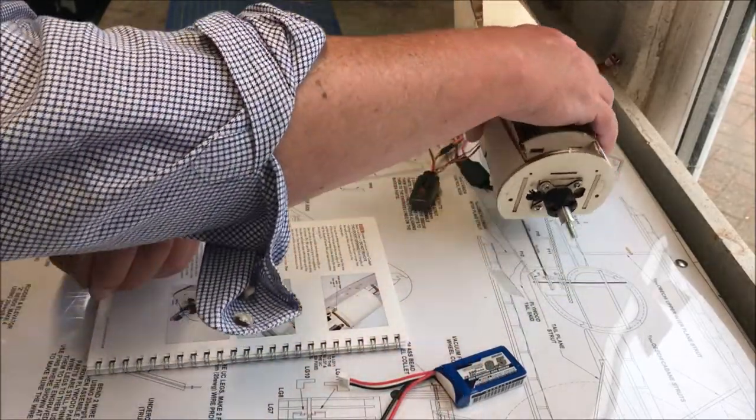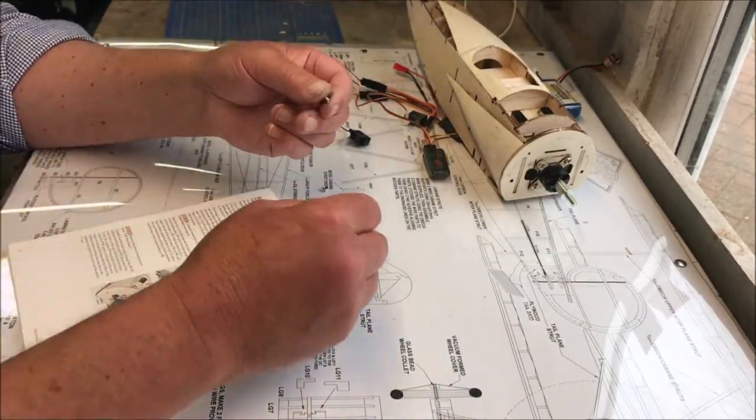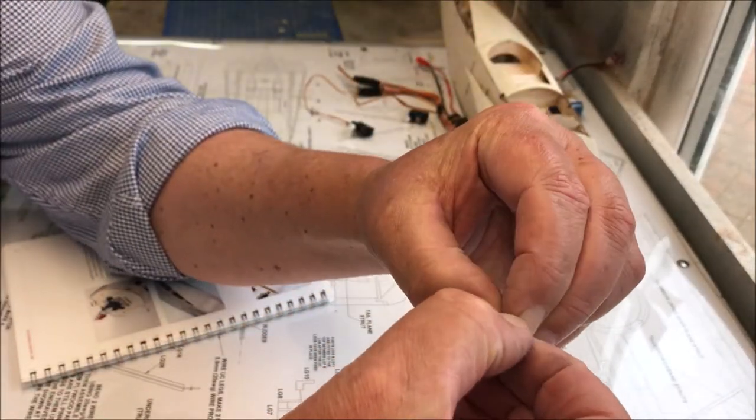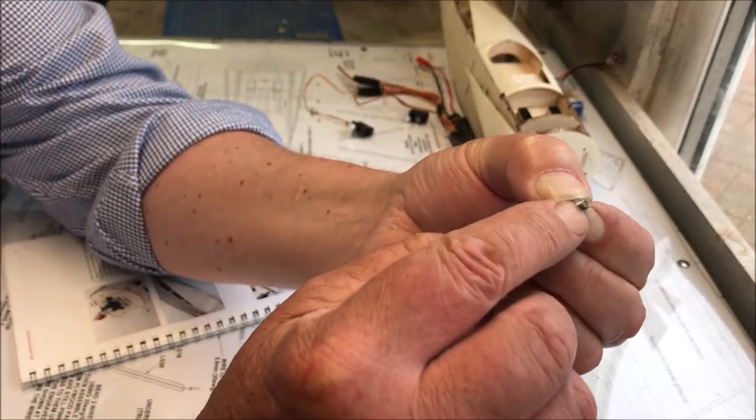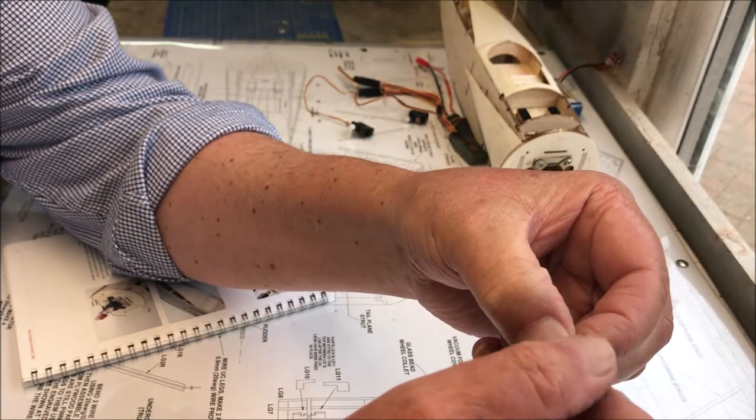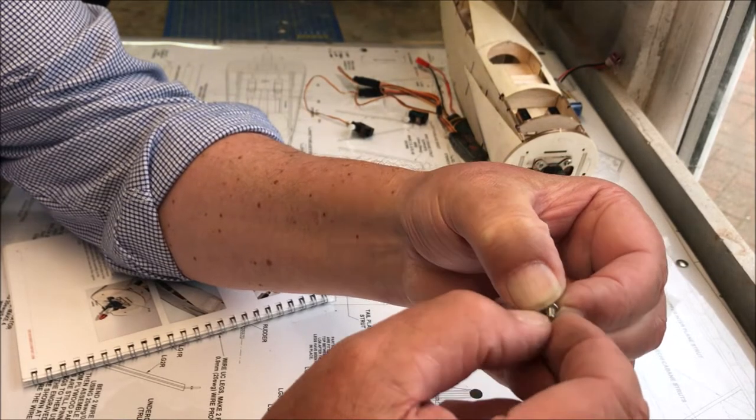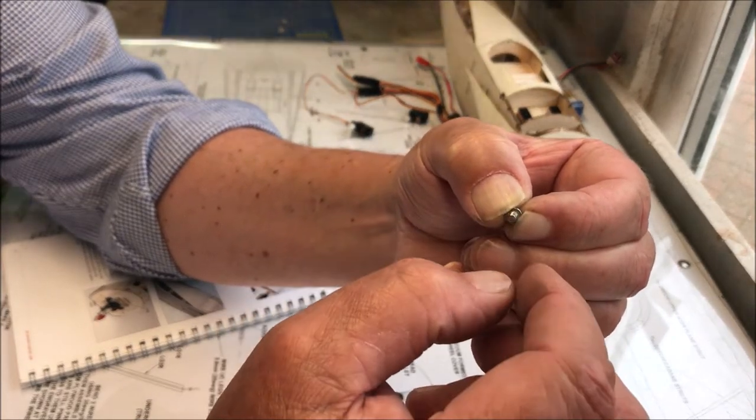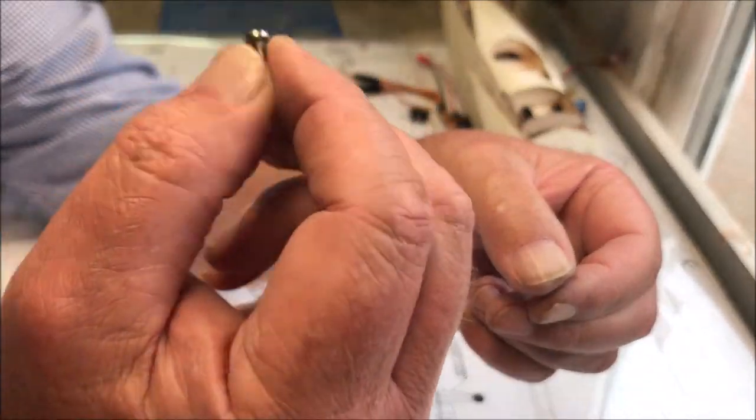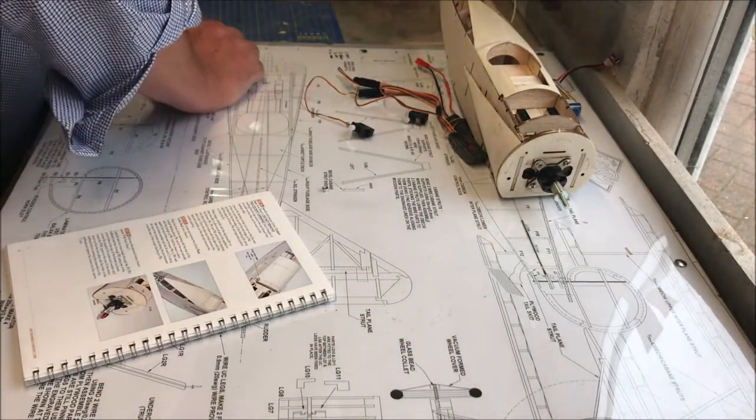Before you cut it, put a nut on the end of the thread down to the head, cut it, file the thread, and then when you unscrew the nut, the nut will help it to thread up so it'll start on the thread properly. 13 millimeters.